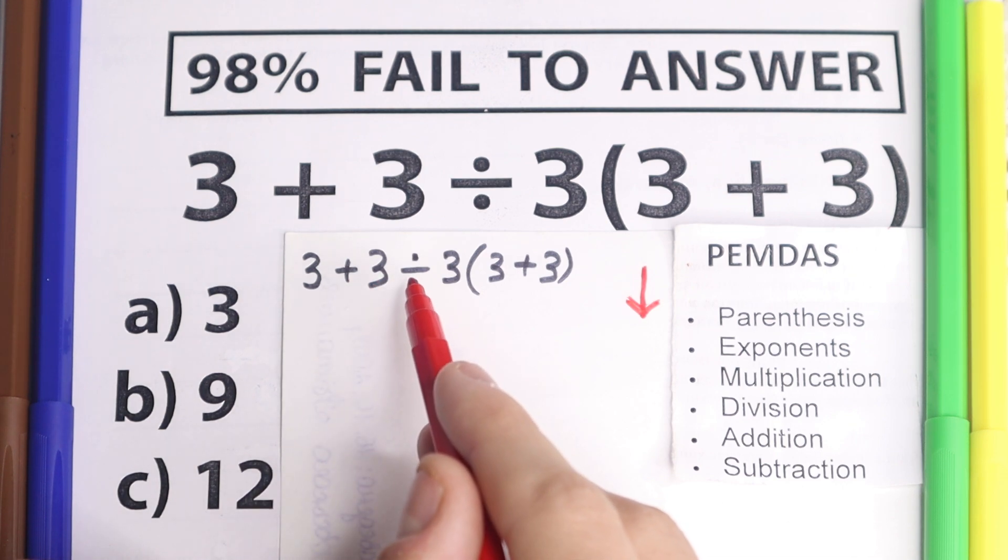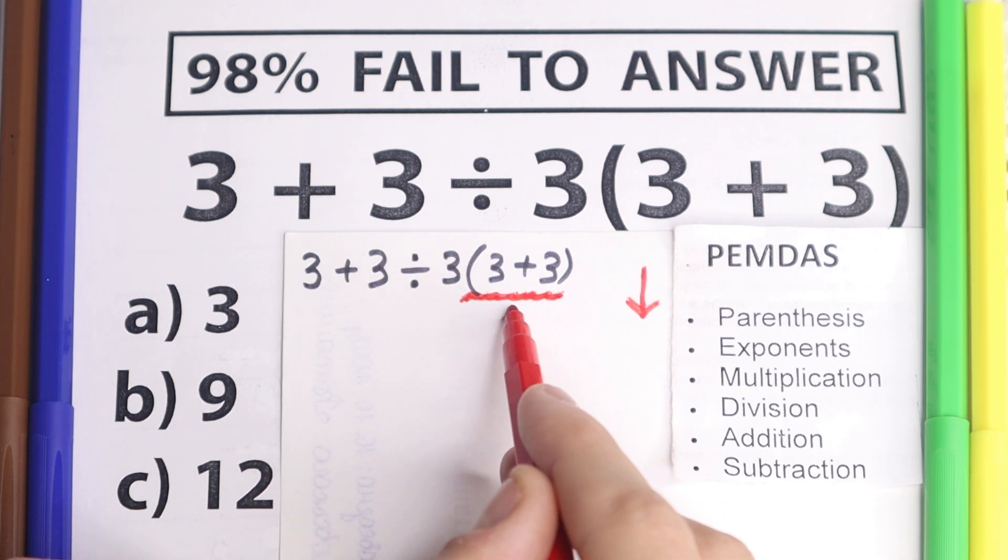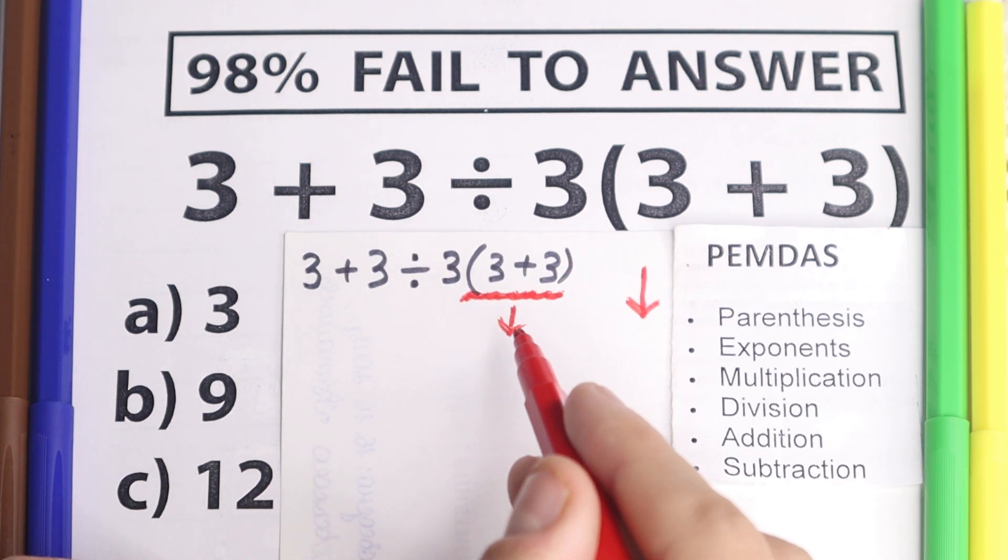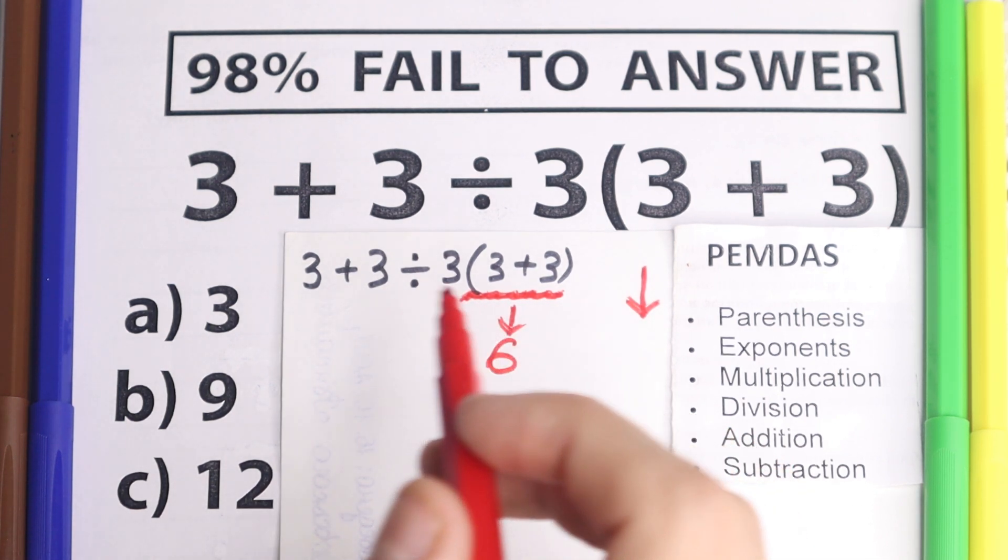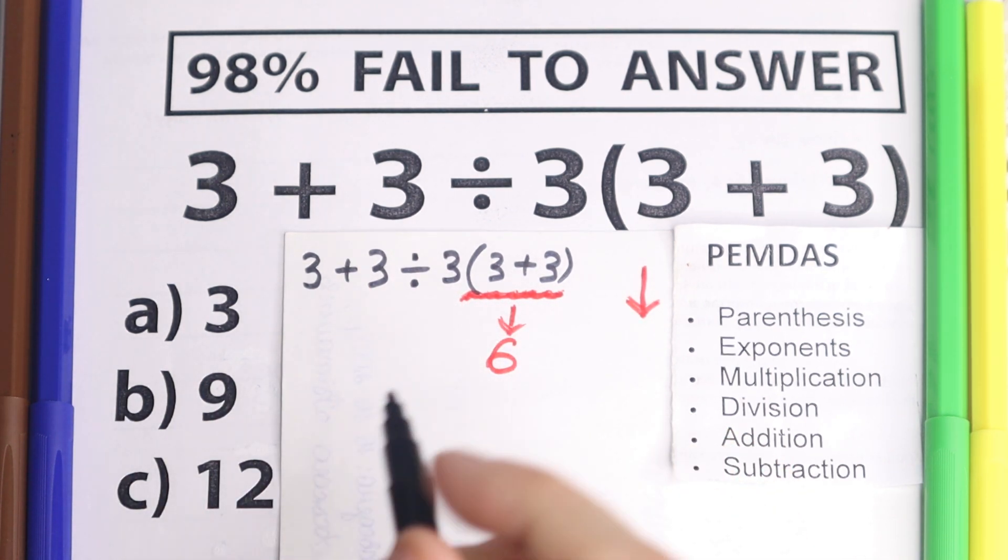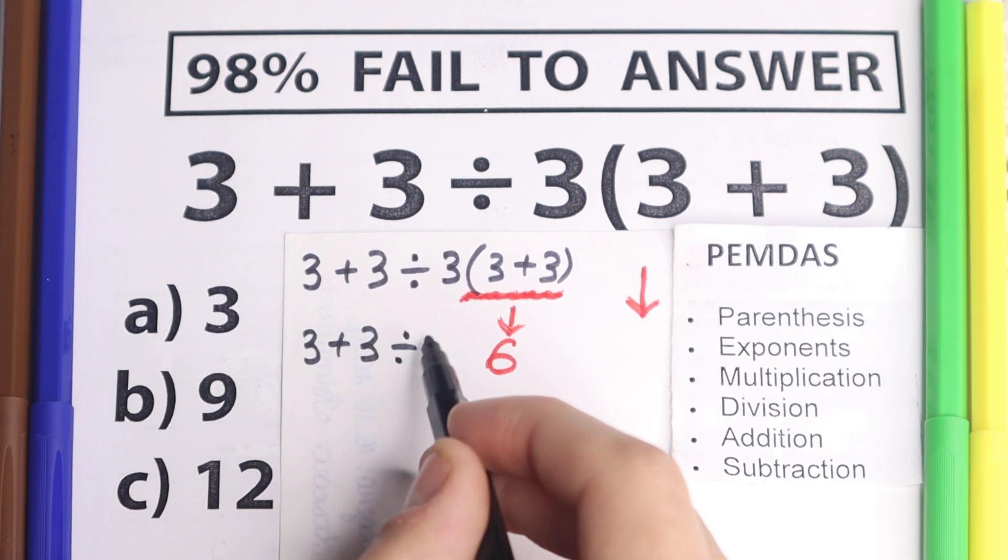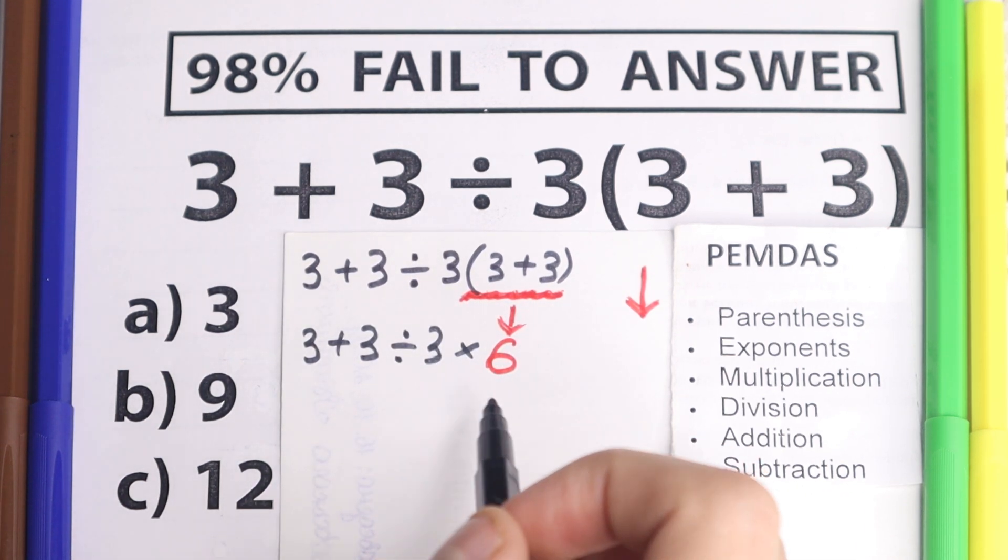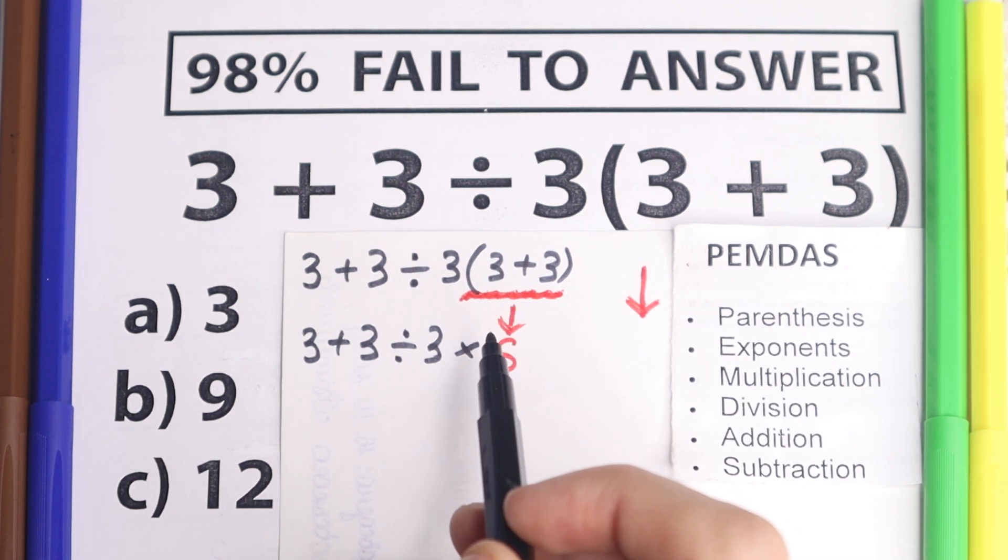And let's scan, are there any parentheses in our case? So 3 plus 3, no, divided by 3, we have parentheses right here in the end, so I put this red line right here and we need to start from these parentheses. 3 plus 3 equal to 6. This is our first step and let's write here in the beginning, so we have 3 plus 3 divided by 3 and times 6. So as you can see after the first step, according to PEMDAS, we just solve these parentheses part.